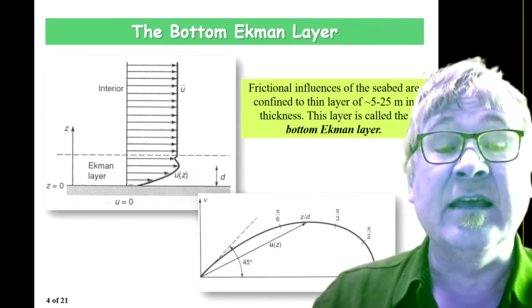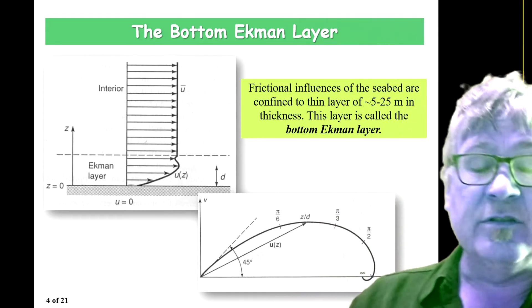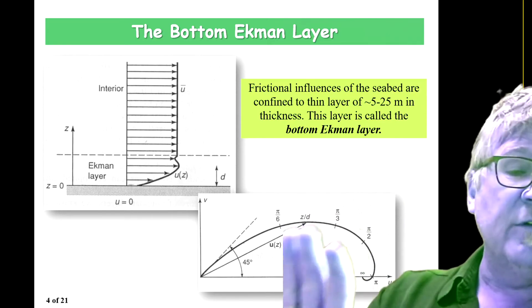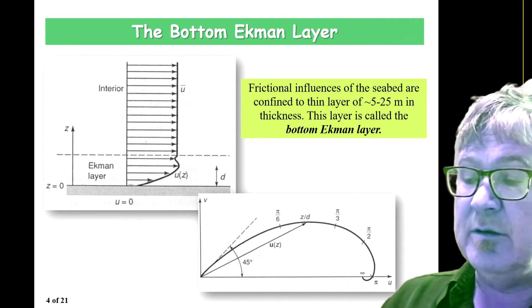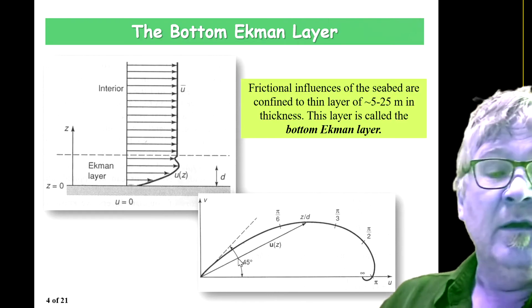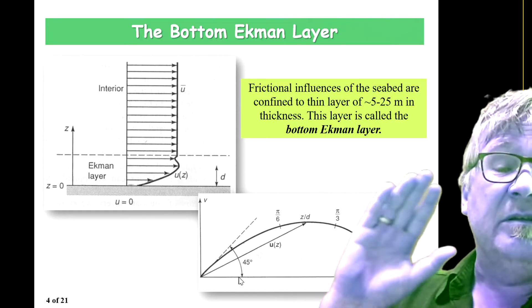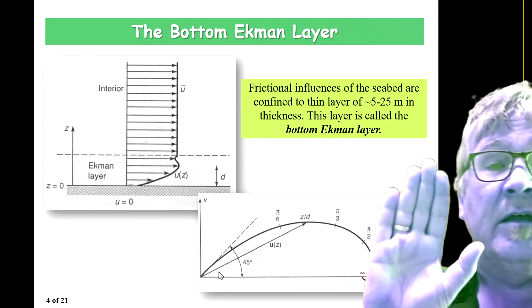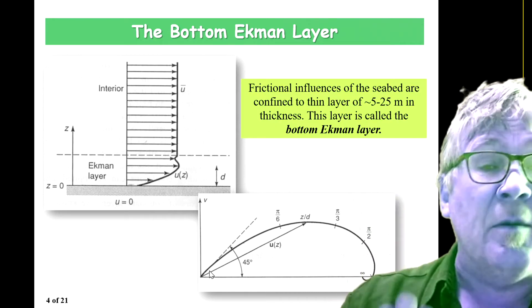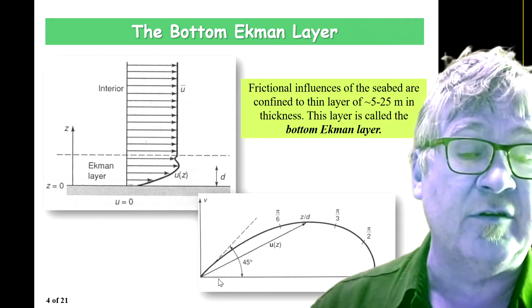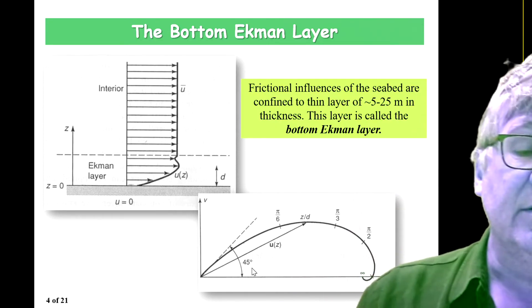And this will be discussed in the next lecture. But this is how the structure looks of the bottom Ekman layer here. And the bottom graph is assuming that you have a current above the Ekman layer. It's a geostrophic current to the right.